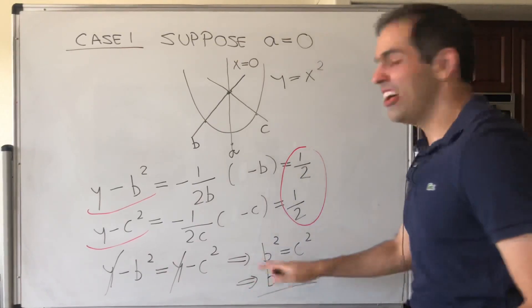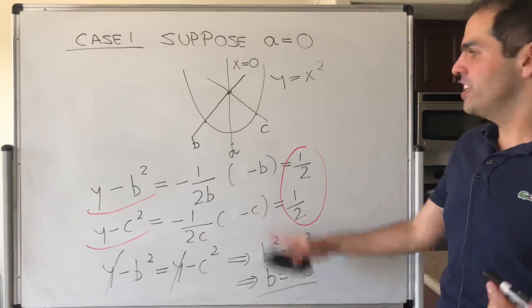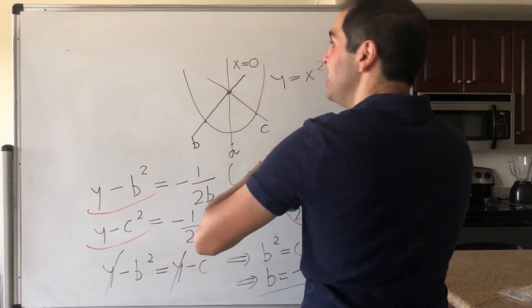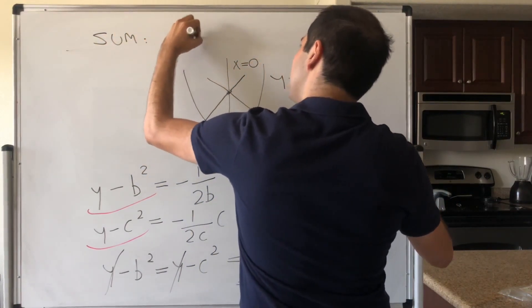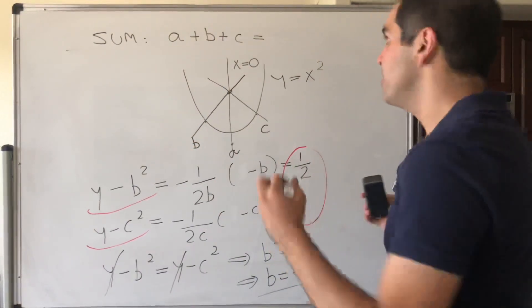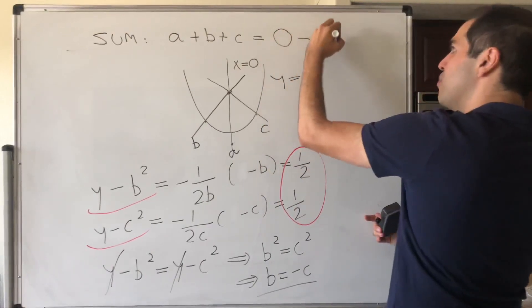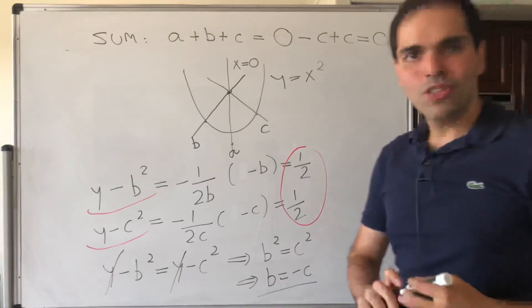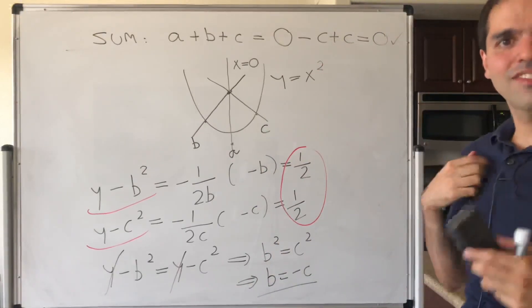And that's why this plus minus is actually very crucial here. But then the question is, what is the sum of the intercepts? It's actually quite neat, because the sum is a plus b plus c. But we assume that a was zero, so we have zero, b is minus c, so minus c plus c, and that gives you zero. So in this boring case, we actually have that the sum of the intercepts is zero.